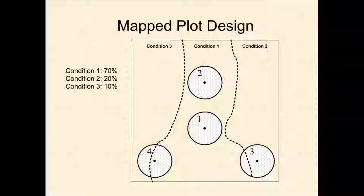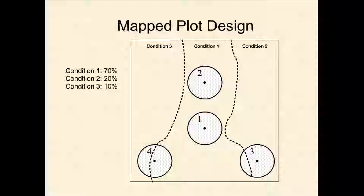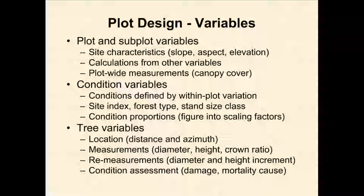The other thing we do that is kind of unique is what we call a map plot design. There's a theoretical center for subplot one, and then we plop it down with the basic design. But if we land in different conditions — changes in composition, changes in age class — we draw a line there and track our data by conditions. There are attributes recorded at the plot or subplot level, at the condition level, and tree-level variables like diameter and mensurational data.